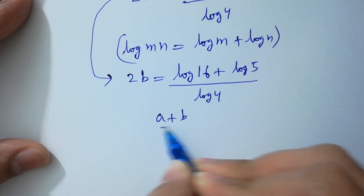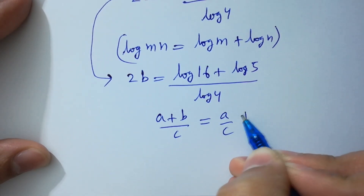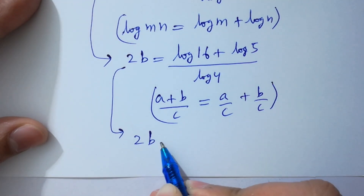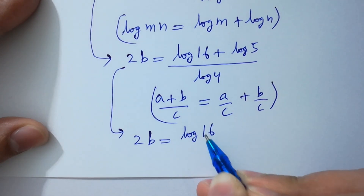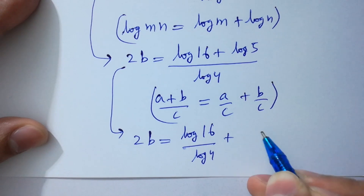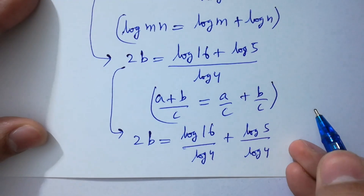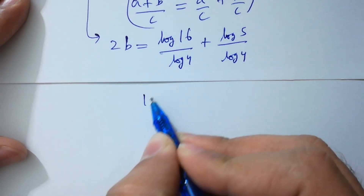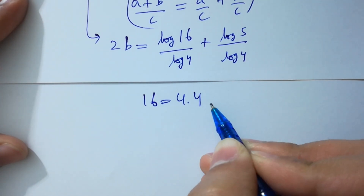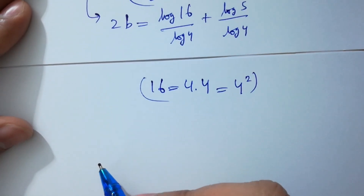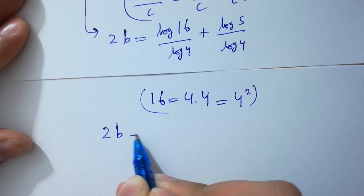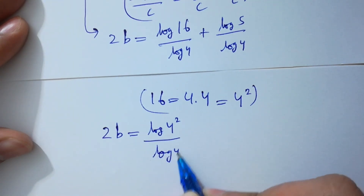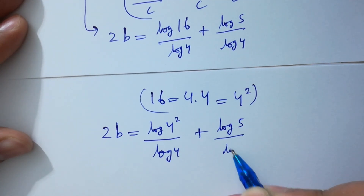Since A plus B over C equals A over C plus B over C, so 2B equals log 16 over log 4 plus log 5 over log 4. Since 16 equals 4 times 4, which is the same as 4 squared, we have 2B equals log 4 squared over log 4 plus log 5 over log 4.